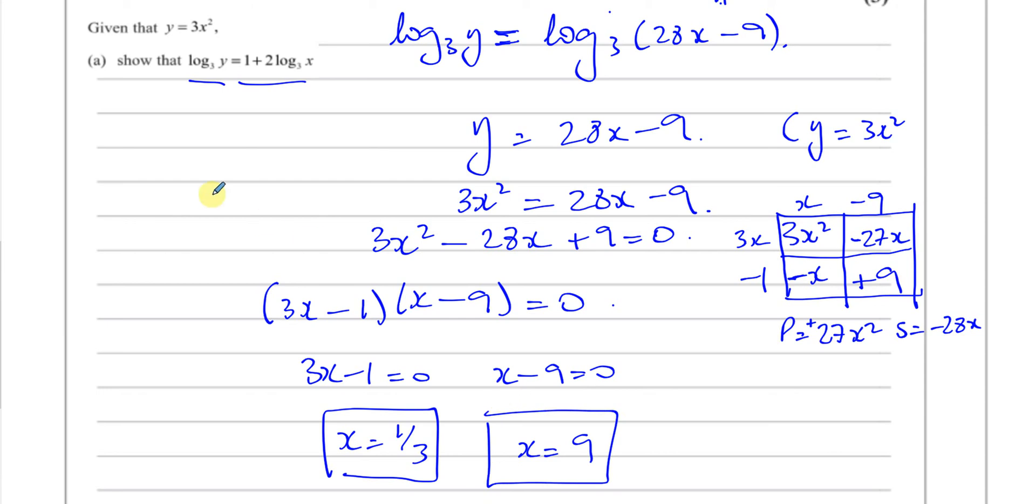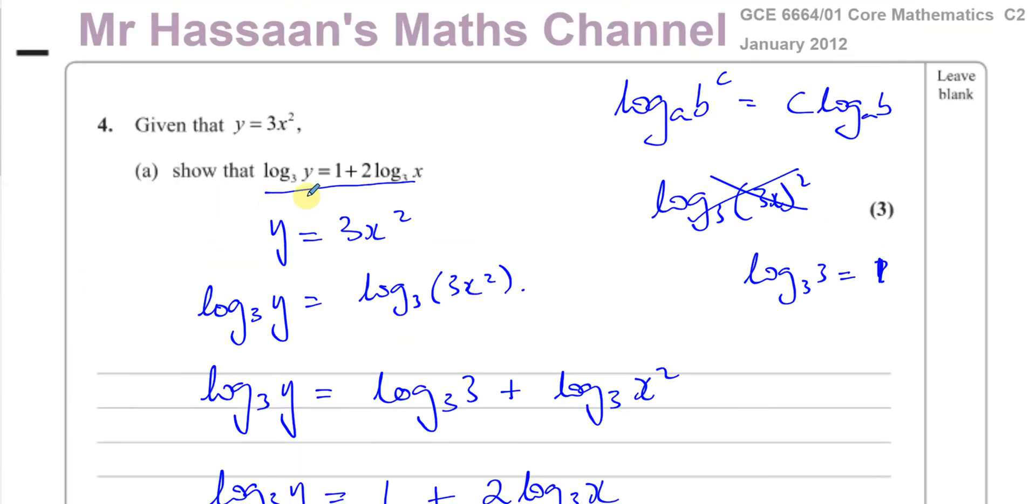And there we have the answer to question number 4 from January 2012, GCE, the Core Maths 2 C2 paper. Now, if you want to see other questions from this paper, then you can click on the link that comes over here. If you want to see other questions from logarithms, it's now called P2, the new syllabus, you'll find a link over here. So I'll include this question in those questions. And if you would like to see some other P2 style papers, you can click on the card at the top and you can subscribe to my channel by clicking on the icon that should appear somewhere in this part of the screen. Thank you for watching and I'll see you soon.